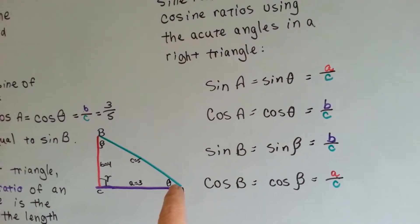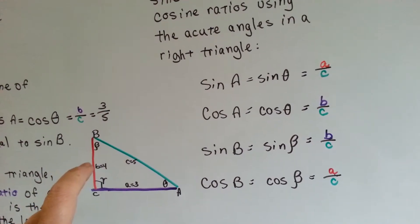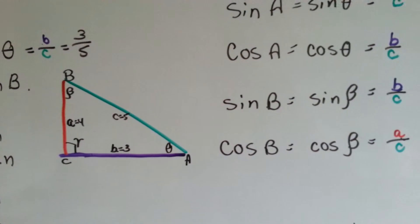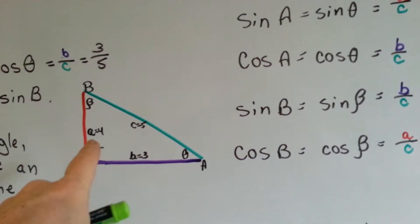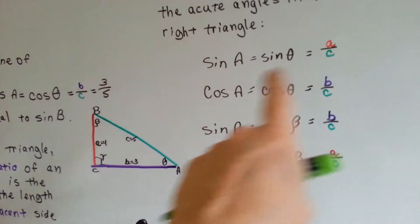Sine A, sine theta, is equal to A over C. This is the side. If you look here, it's the red side over the green side. A over C.